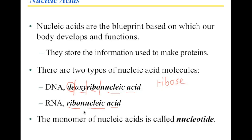They also have true monomers, and these monomers are called nucleotides. So now we have the complete set. Monosaccharides are the monomers of carbohydrates. Amino acids are the monomers of proteins. And nucleotides are the monomers of nucleic acids.